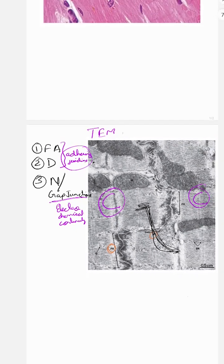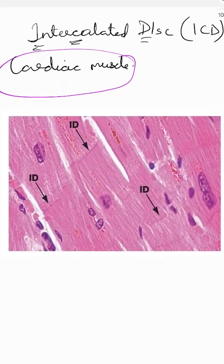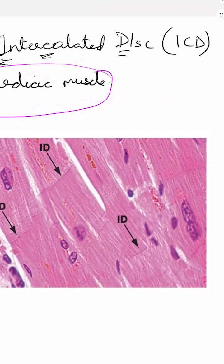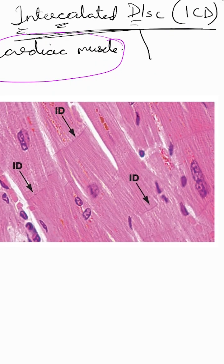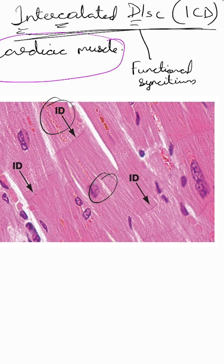Altogether, the function of the intercalated disc is to make cardiac muscle function as a functional syncytium. All cells are electrically connected and mechanically coupled, so the intercalated disc serves as an electromechanical coupling mechanism.